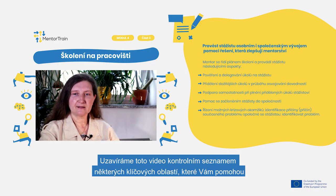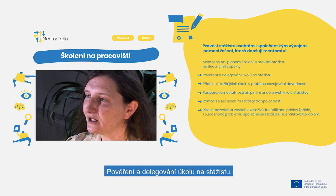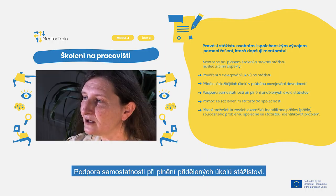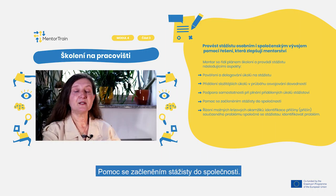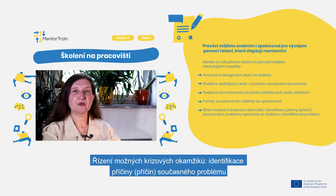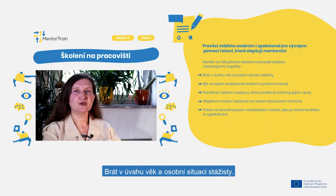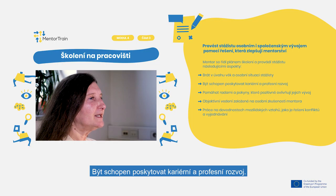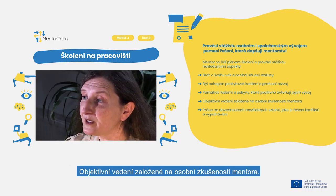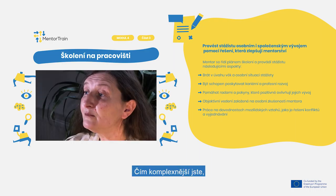We conclude this video with a checklist of some key highlights that will help you throughout your mentoring and apprentices' training process. Those are: entrusting and delegating to the apprentice, assigning more difficult tasks as they progress in the acquisition of skills, fostering autonomy in the performance of the assigned tasks, helping the apprentice integrating in the company, managing possible crisis moments, identifying the cause of current problems together with the apprentice, identifying where the problem is, being aware of the apprentice's age and personal situation, being able to provide career and professional development, helping with advice and guidance that positively influence their evolution, objective guiding based on the personal experience of the mentor, and working on interpersonal relationship skills such as conflict management and negotiation.